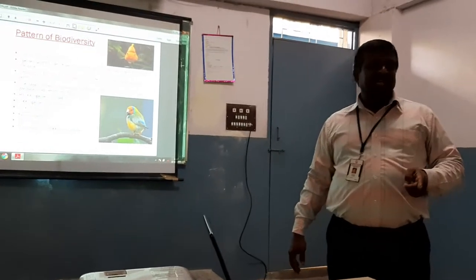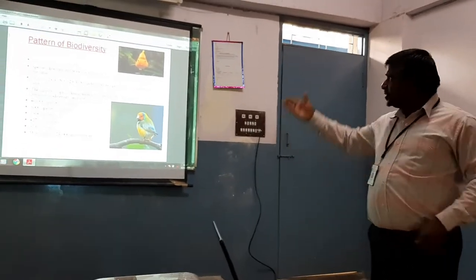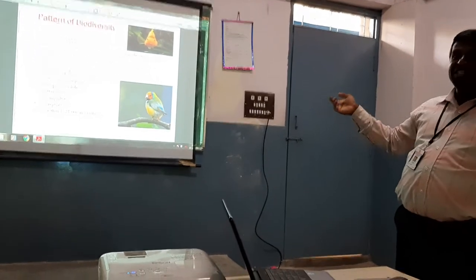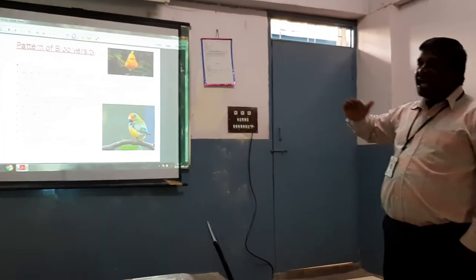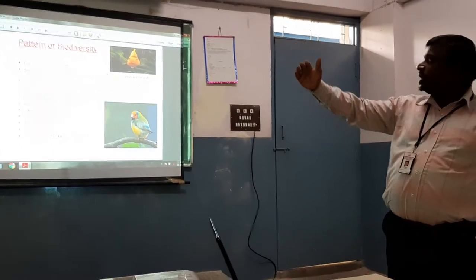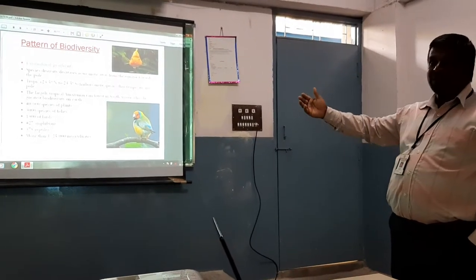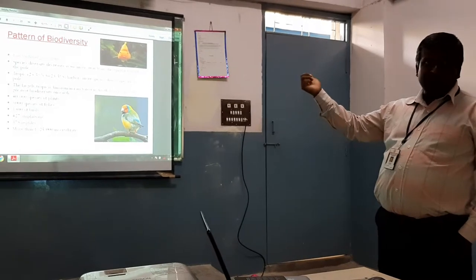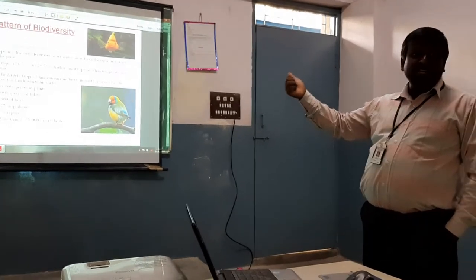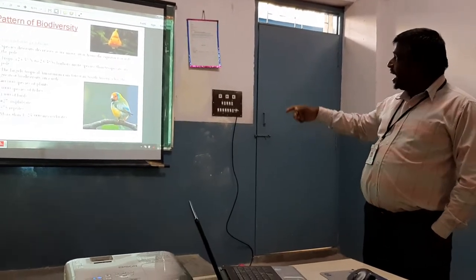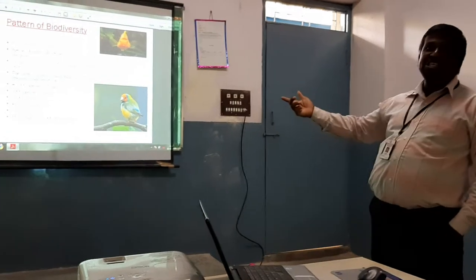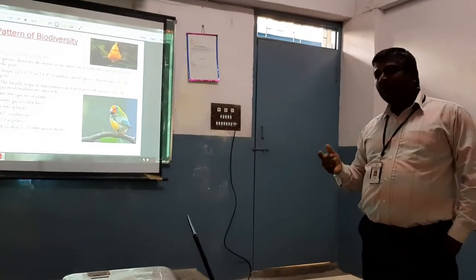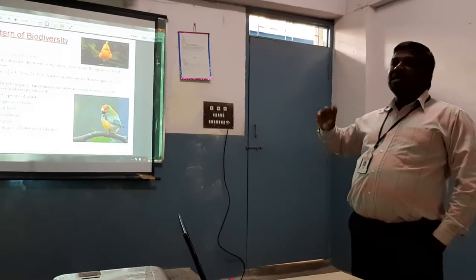On the equatorial zone you find maximum biological diversity. In our planet, species diversity decreases as we move away from the equator towards the poles. Tropics have more species than temperate and polar regions.